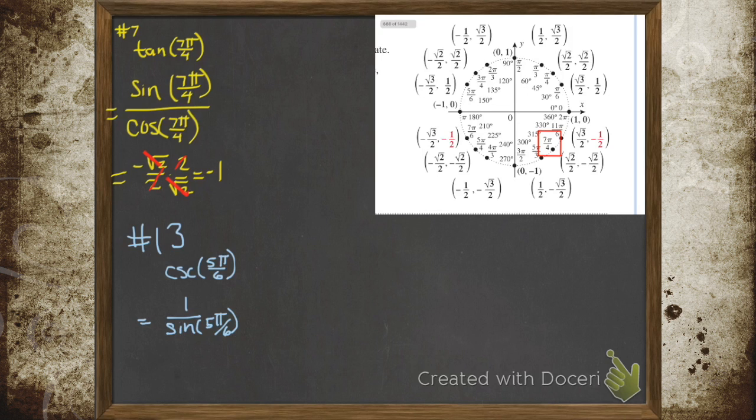So now we need to go find 5π/6. Oh look, there it is. So these ordered pairs, since this is a unit circle, are of the form cosine, sine. So I saw the sine.